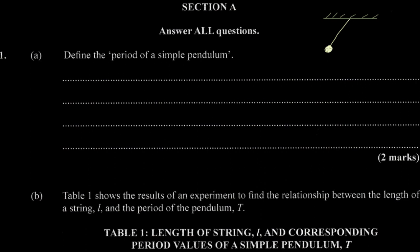Now let's talk about the period. When this pendulum is displaced from some equilibrium point, the pendulum will swing starting from that point, swing past the equilibrium point, go to the opposite side, and then swing back — basically swinging back and forth once displaced from its initial equilibrium point.